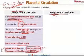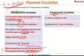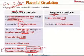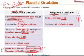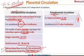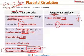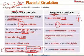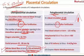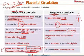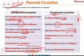The fetoplacental circulation comprises mainly blood circulation in the villi, where fetal blood vessels open, forming tertiary villi. It is established by 17 days after fertilization — two days after the establishment of the uteroplacental circulation. Another important question is the fetal blood volume at term, which is 125 ml per kg.